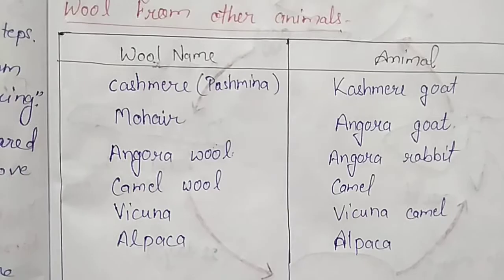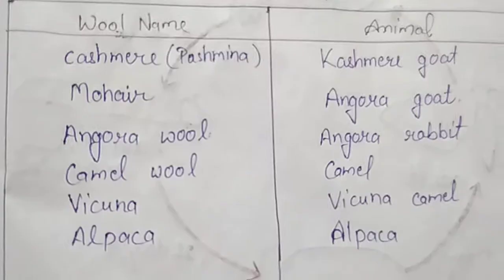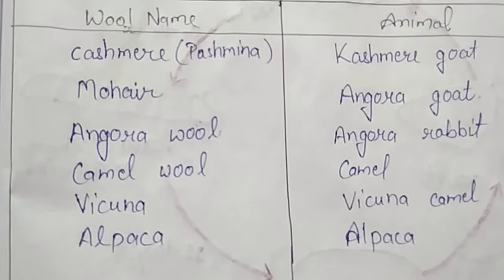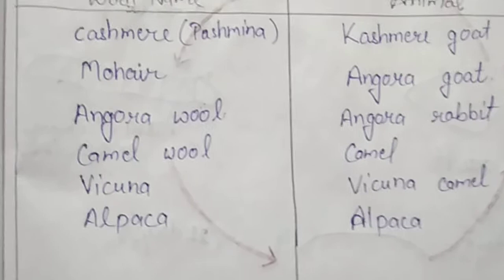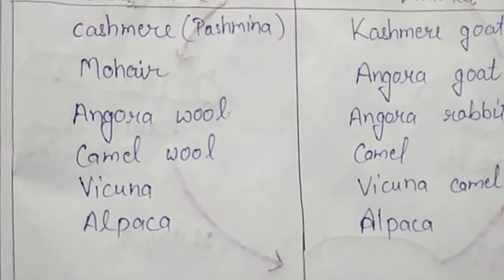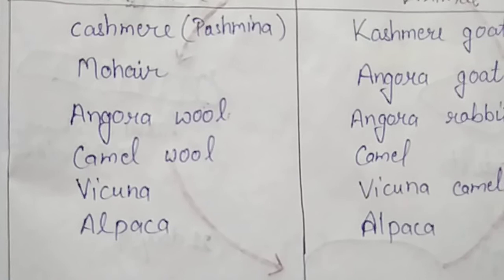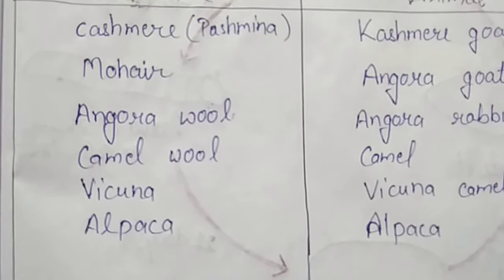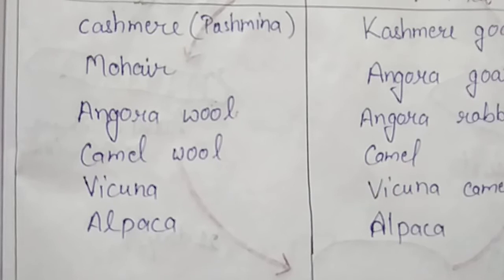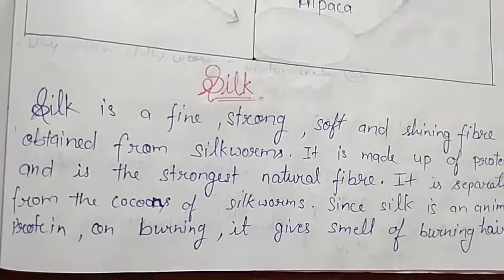We also get wool from yaks, llamas, and alpacas. A question arises: why do we wear woolen clothes in winter? Woolen clothes are made up of wool, and woolen fibers trap air between the fibers. Air is a bad conductor of heat — it does not allow body heat to escape and keeps our body warm.